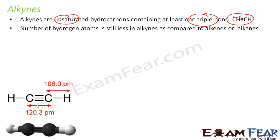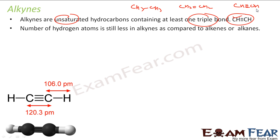The number of hydrogen atoms is less in alkynes compared to alkenes. For example, ethane has 6 hydrogens for 2 carbons, ethene has 4 hydrogens for 2 carbons, and ethyne has only 2 hydrogens for 2 carbons. The hydrogen concentration decreases.